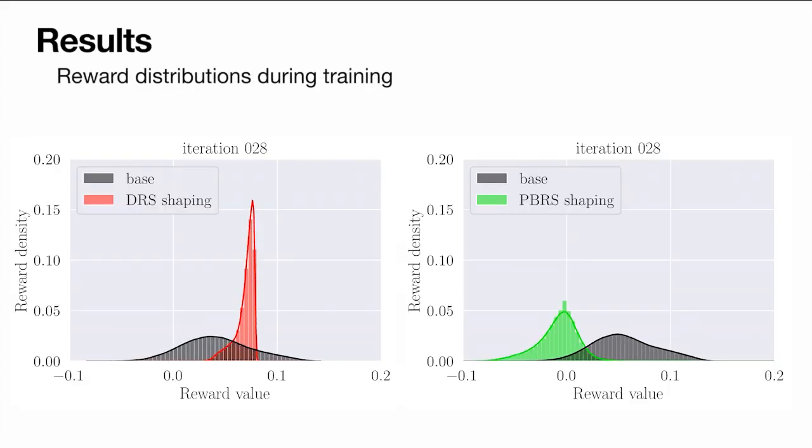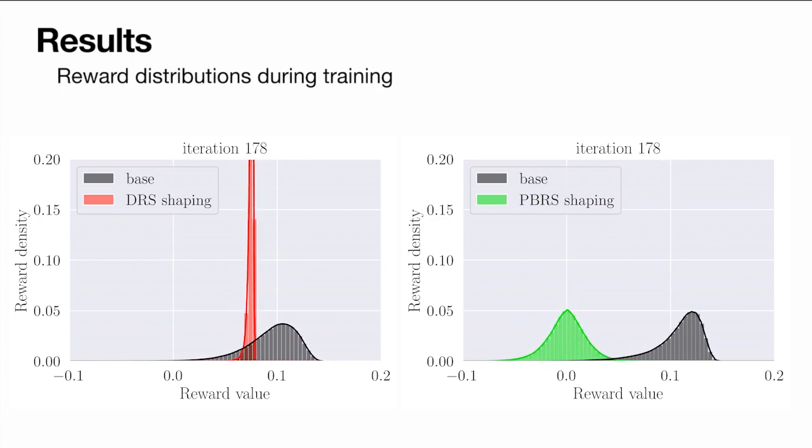A closer look reveals that DRS policies quickly learn to maximize the shaping rewards first and then gradually increase the average return due to base rewards. On the other hand, for PBRS policies, the distribution of shaping rewards remains centered with zero mean and is well distributed throughout the training process. This suggests that the potential-based rewards affect the policy gradients without competing with the base rewards, which could explain the easier tuning we observe.